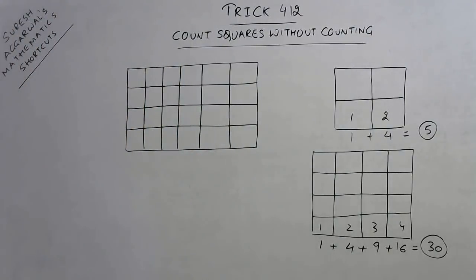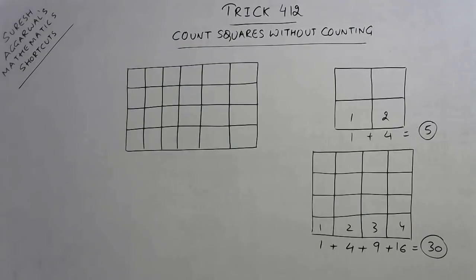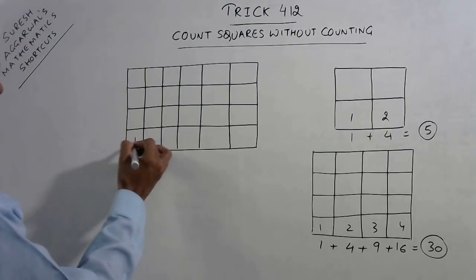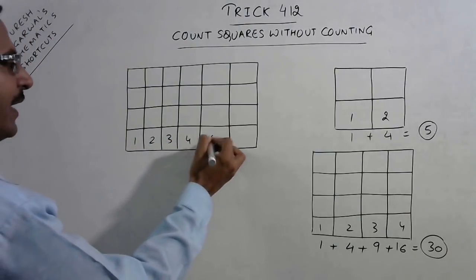Now see this case. Here the rows contain a different number of squares as compared to the columns, so the method slightly changes. I am going to tell you a shortcut through which you can find the number of squares in this figure also without actually counting them. In this case, you write 1, 2, 3, 4, 5, 6 — you have 6 squares in the bottom row.